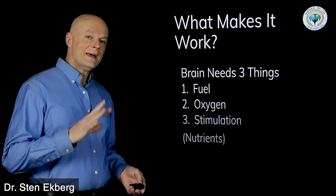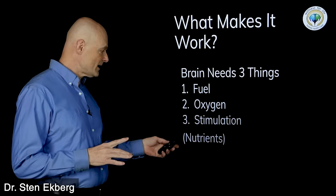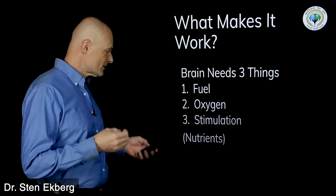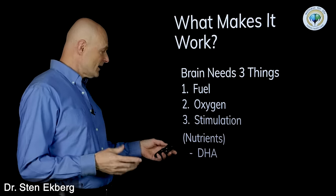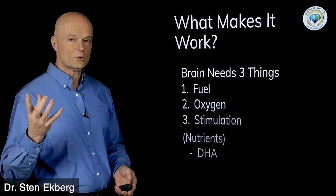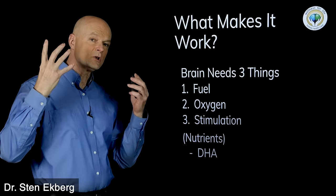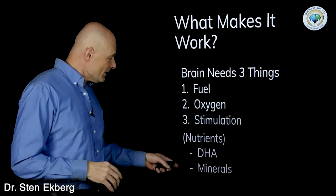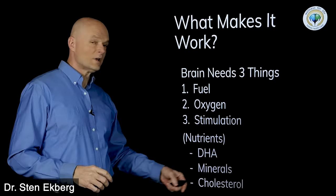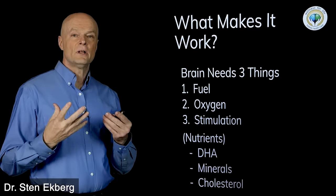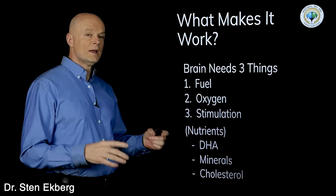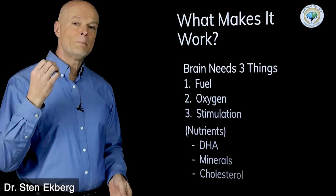For completeness, brain cells also need some nutrients, building materials, and catalysts. One key nutrient is DHA — the longest, most complex type of fish oil — which is a structural component of the brain. We also need minerals as catalysts and cholesterol as a building material and insulation. But for this discussion we'll focus on fuel, oxygen, and stimulation to understand the mechanisms of why the brain degenerates.